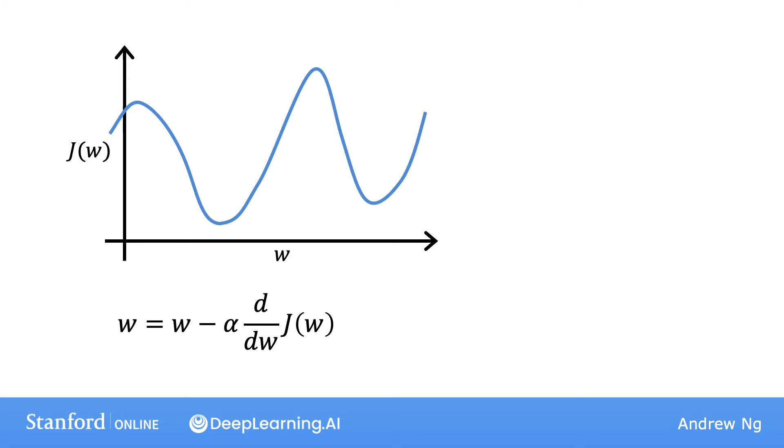So here's another question you may be wondering. What if your parameter w is already at this point here, so that your cost j is already at a local minimum? What do you think one step of gradient descent will do if you've already reached a minimum? So this is a tricky one. When I was first learning this stuff, it actually took me a long time to figure it out. But let's work through this together. Let's suppose you have some cost function j. And this cost function has two local minima corresponding to the two valleys that you see here.